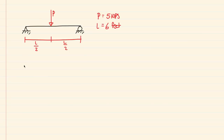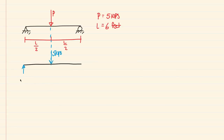The first thing is to draw the free body diagram. I'll create the beam of the same length. The point load is right in the middle of the span, so the reactions on the left and right are going to be the same. With a 5 kip point load at the center, the reaction on the left side is 2.5 kips and the reaction on the right side is also 2.5 kips.